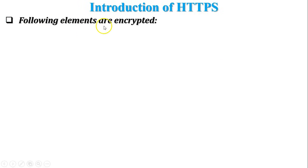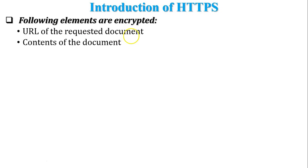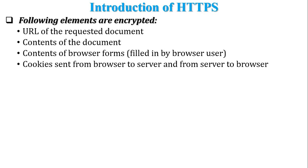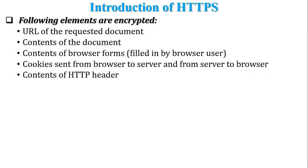The following elements are encrypted during HTTPS communication: the requested URL, the content of the document, the content of browser forms filled by the user, cookies sent from browser to server and from server to browser, and the content of the HTTP header. These five elements are encrypted during communication.